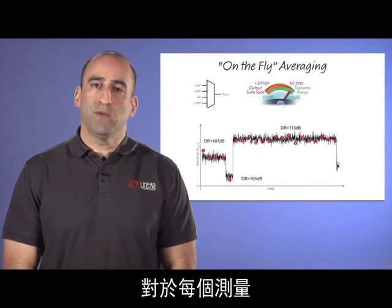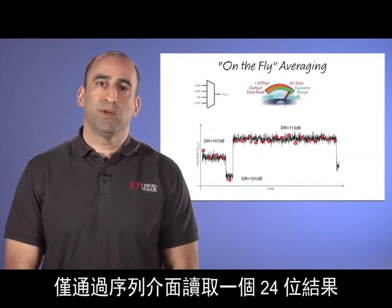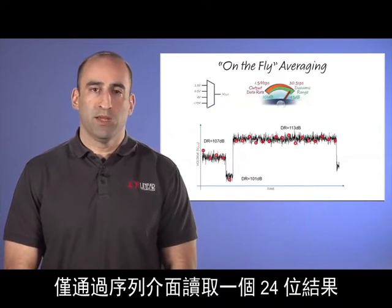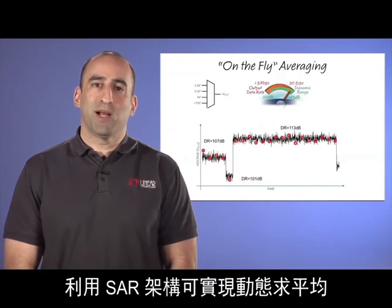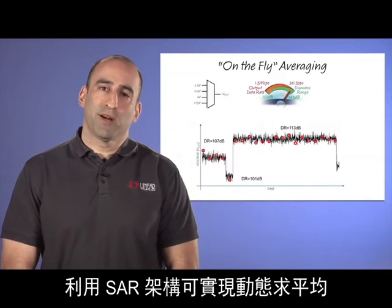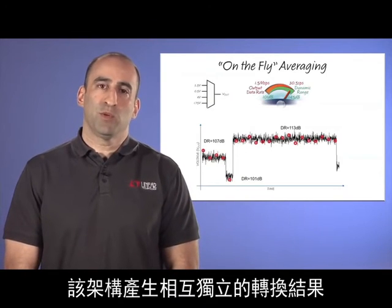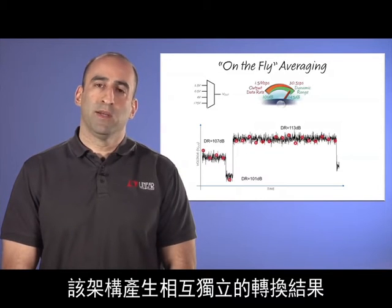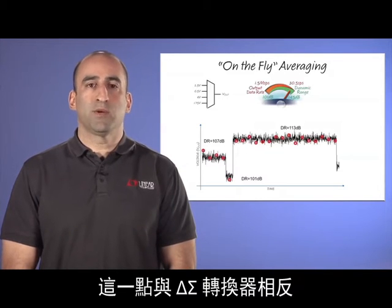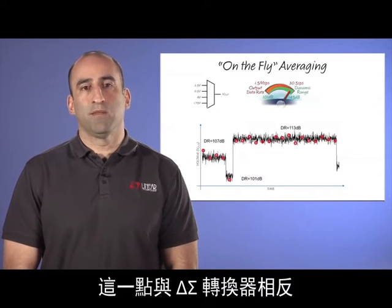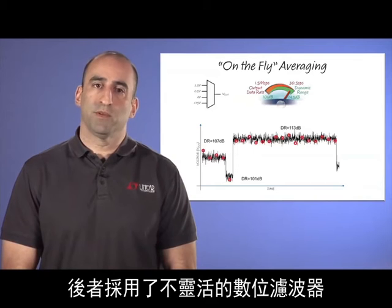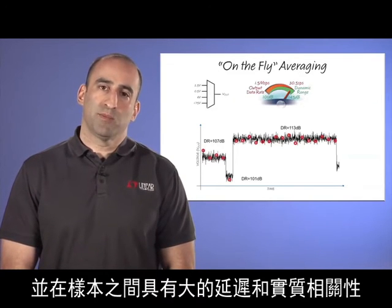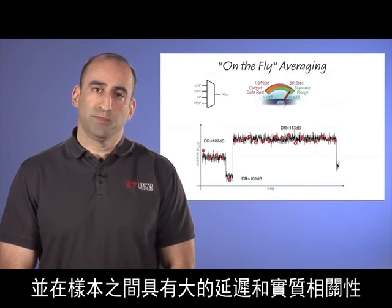Only one 24-bit result is read through the serial interface for each measurement. On-the-fly averaging is made possible by the SAR architecture, which produces conversion results that are independent of one another. This is in contrast to Delta Sigma converters that have inflexible digital filters with large delays and substantial correlation between samples.